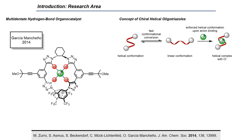This catalyst has a fast conversion between a helical and a linear conformation when no chloride anion is present, but if a chloride or an anion is present, the catalyst prefers to form the helical structure.